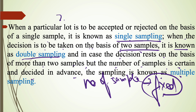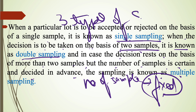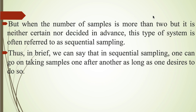So there are basically three types of sequential sampling. Now, when the number of samples is more than two, but it is neither certain nor decided in advance, then this type of system is often referred to as sequential sampling.